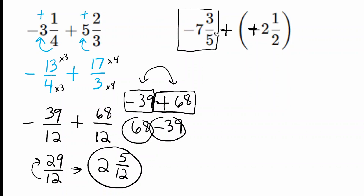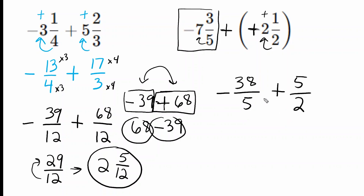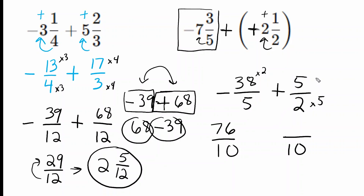We convert each one into an improper fraction. Five times seven is 35, and 35 plus three is 38, so the denominator stays the same. We take our negative and migrate it along with our improper fraction. For the second mixed number, two times two is four, plus one more is five — so that's plus five halves. Next, we need a common denominator, so we convert to tenths, which is the lowest common denominator. We doubled the five, so we double the 38 to get 76. The two got five times bigger, so the five gets five times bigger, giving us 25.